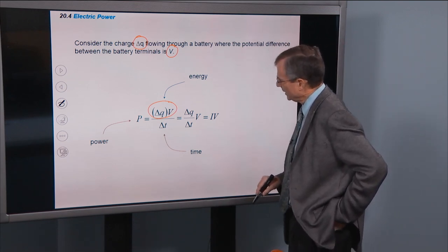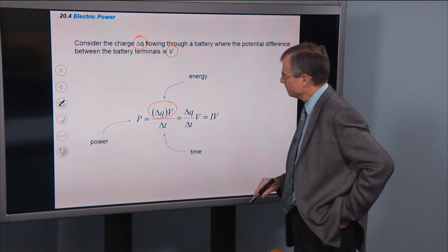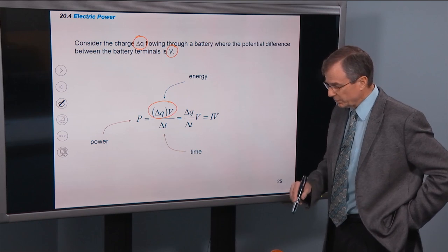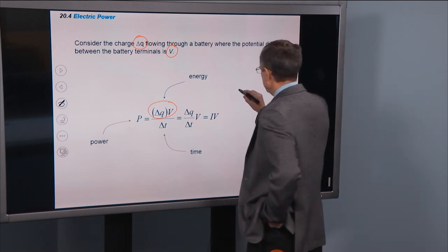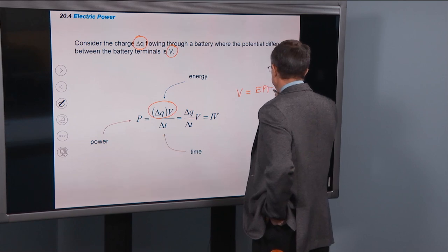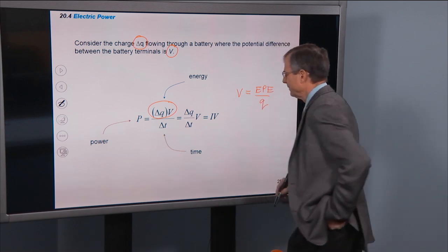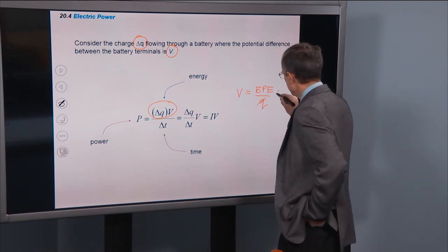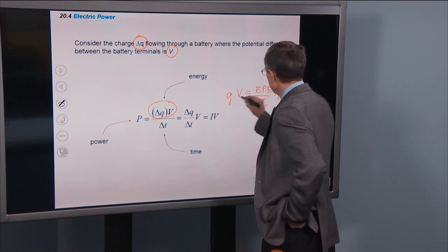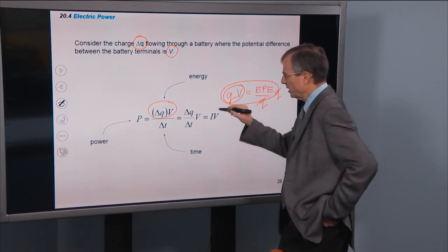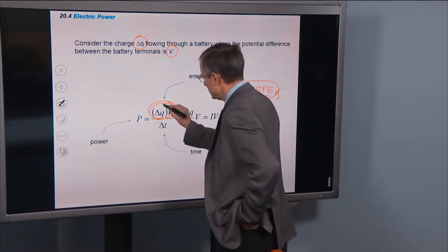The electric potential energy, the voltage is defined as the electric potential energy divided by the charge. And so the energy itself, if you multiply both sides by the charge, this energy is going to be charge times voltage. So that's what this is here.